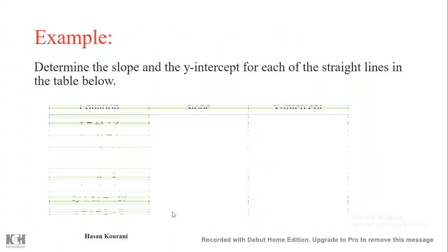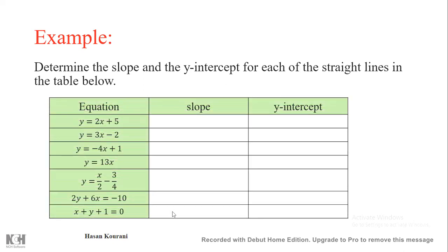Example: determine the slope and y-intercept for each equation in the table. For y = 2x + 5, slope a = 2, y-intercept b = 5. For the next, a = 3, b = −2. Then a = −4, y-intercept = 1. For y = 13x, the y-intercept is 0 and slope is 13.